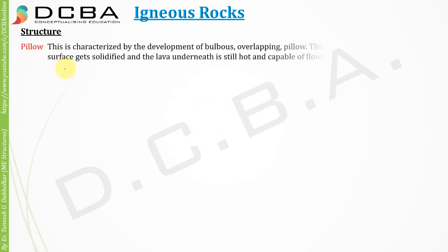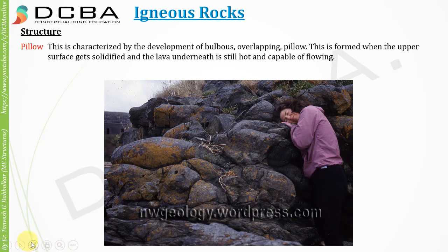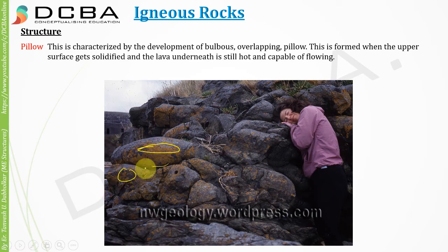Next is pillow structure. This is characterized by the development of bulbous overlapping pillows. It is formed when the upper surface gets solidified and the lava underneath is still hot and capable of flowing. The top portion cools, but lava below is still flowing and comes from underneath, cooling ahead of the solidified portion — just forming a pillow type of structure.